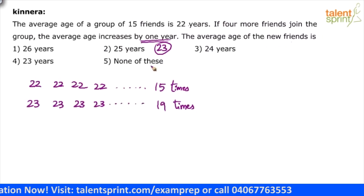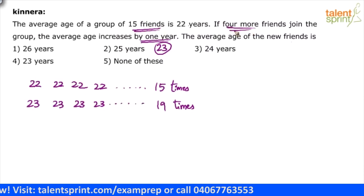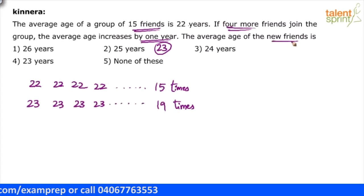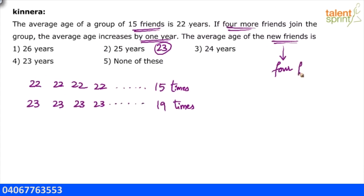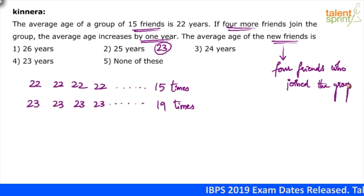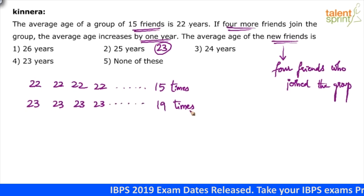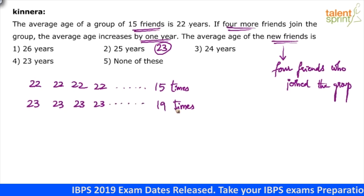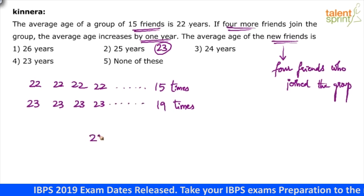Why 19 times? Because earlier there were 15 friends, now four more have joined, so total 19 times. What is the average age of the new friends? Assuming that these are the four friends who joined the group — these four persons have also got 23 each, so 23 is there for them as well.